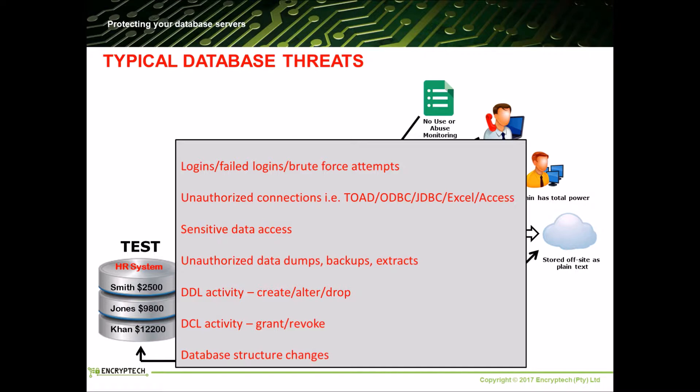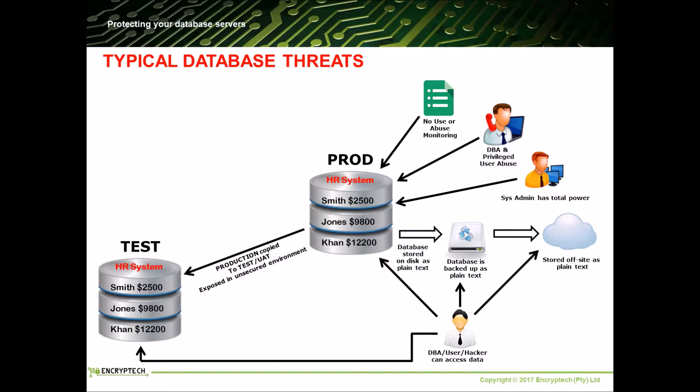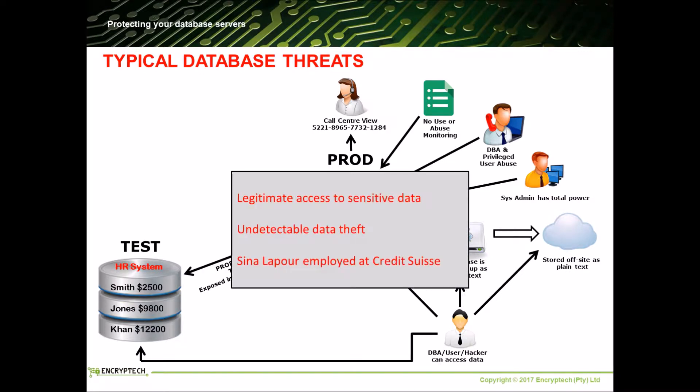DDL, DCL and database structure should also be monitored. Access to personal information is often a requirement for certain job functions within an organization, such as call center agents and other administrative type roles. It is very easy for users in these positions to simply write down on paper the sensitive information shown on their screen, and this will go completely undetected.